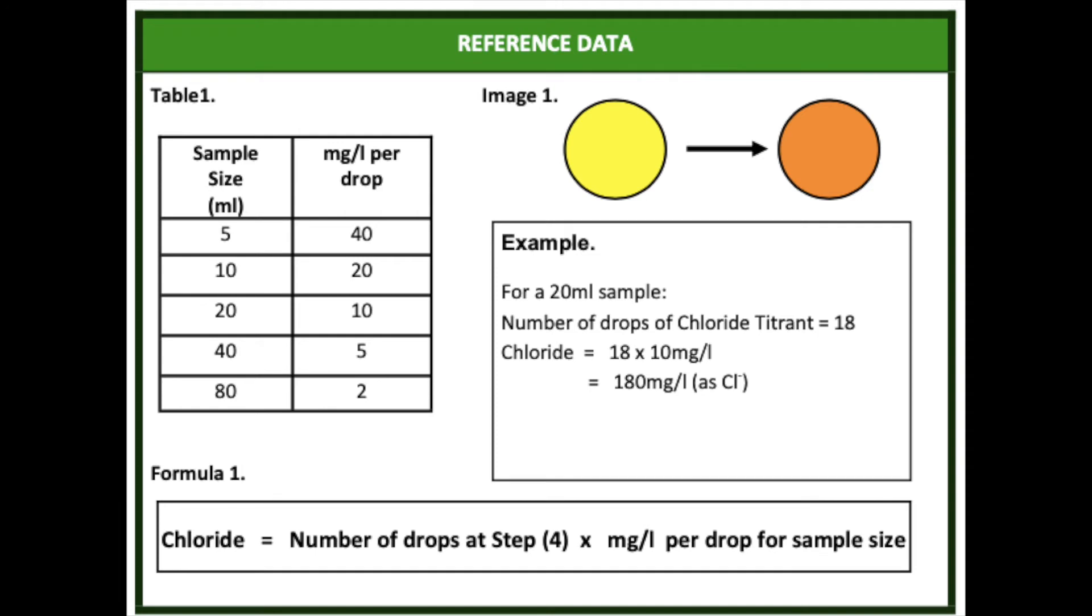Using the formula on the method sheet calculate the chloride concentration. On a 20ml sample each drop represents 10ppm of chloride. For example if the test took 18 drops then you would multiply 18 by 10 which would give a chloride level of 180mg per litre.